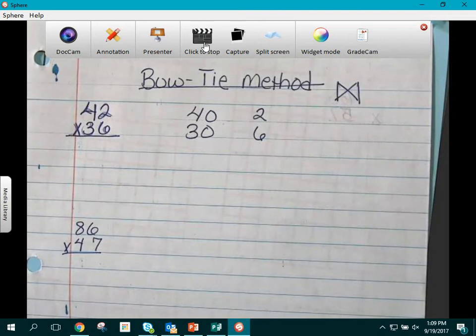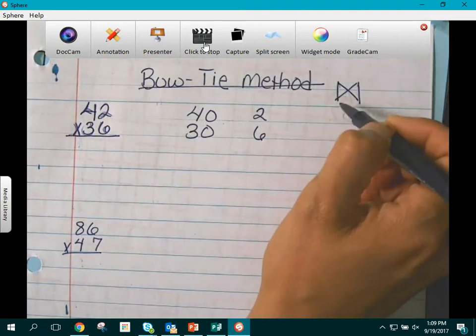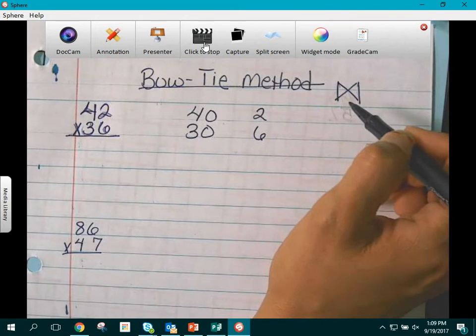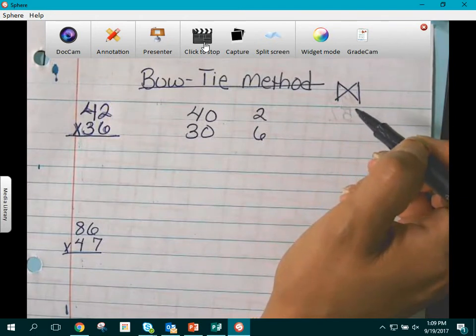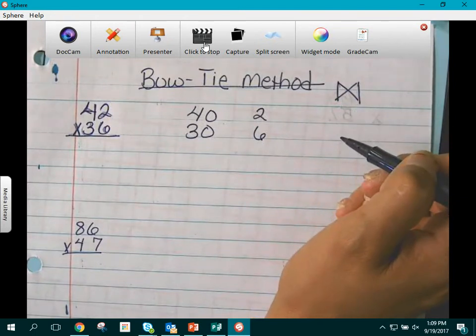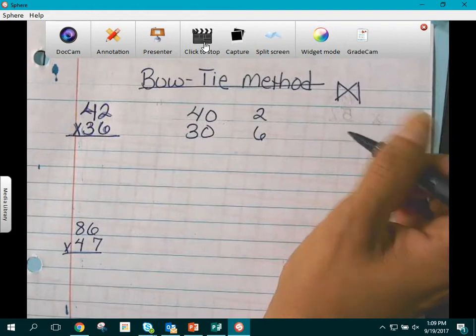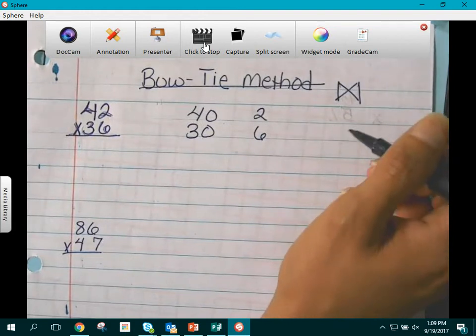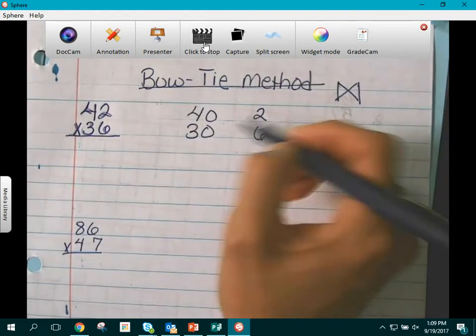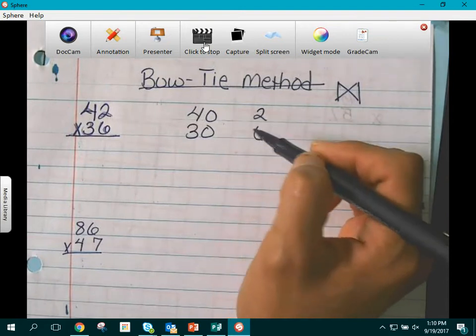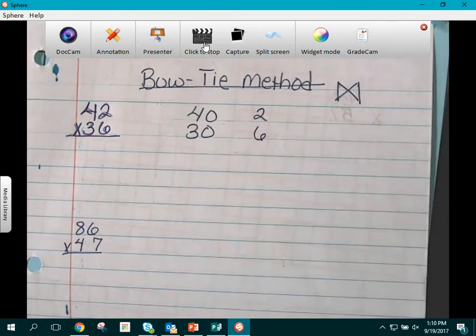Our Bow-Tie Method is a form of cross multiplication which is basically the same thing in the way that parents were taught when they were in elementary school, which is just standard algorithm calculation. This is now expanding it to see the values of the numbers instead of just memorizing a method.